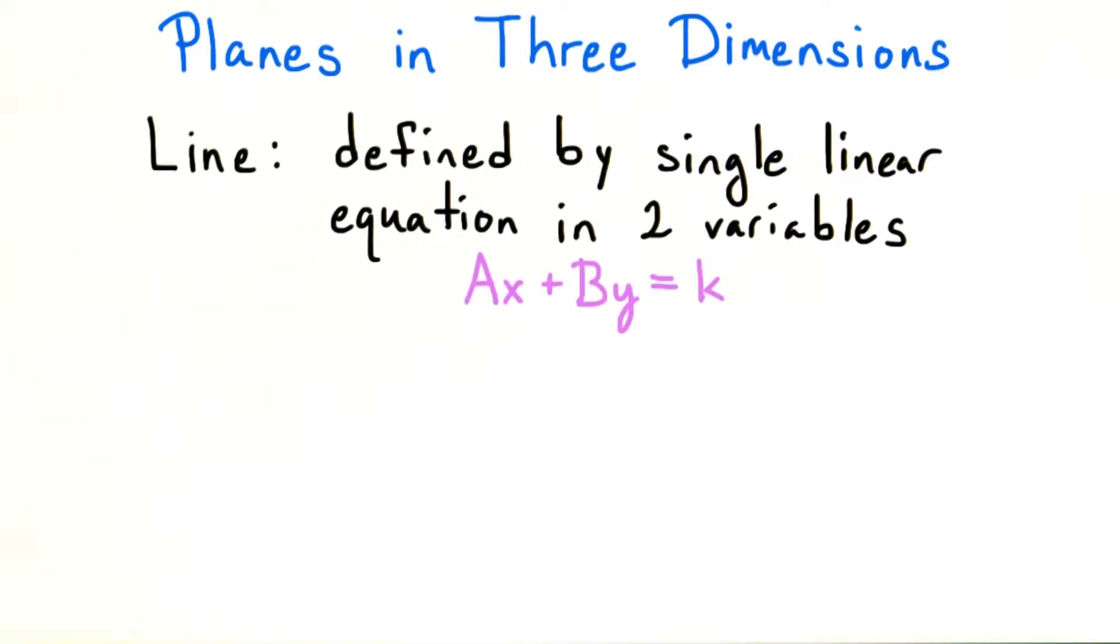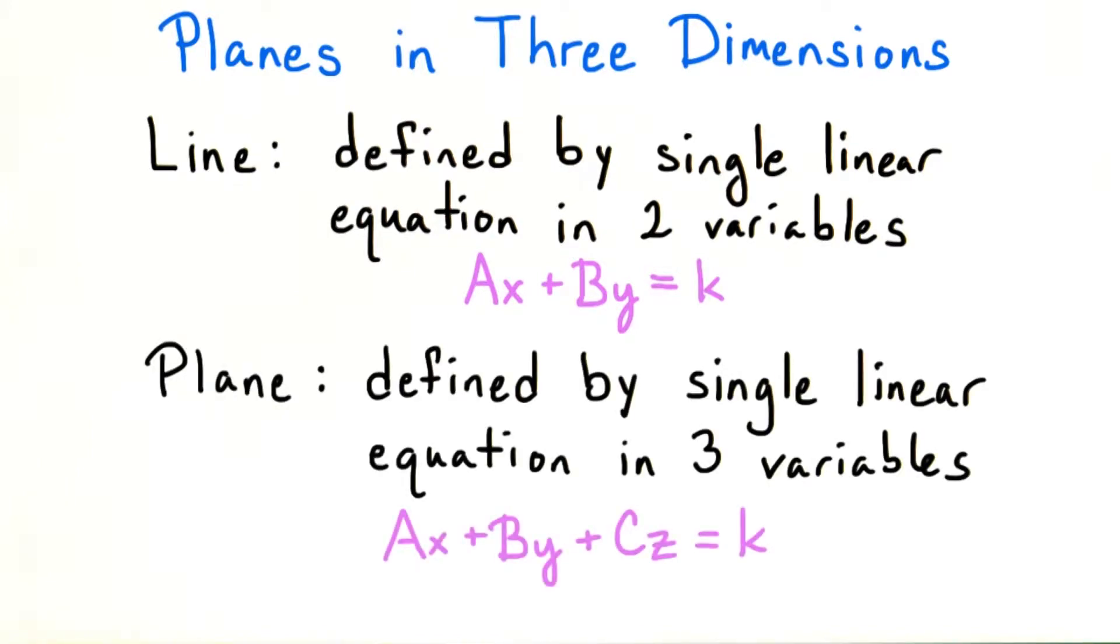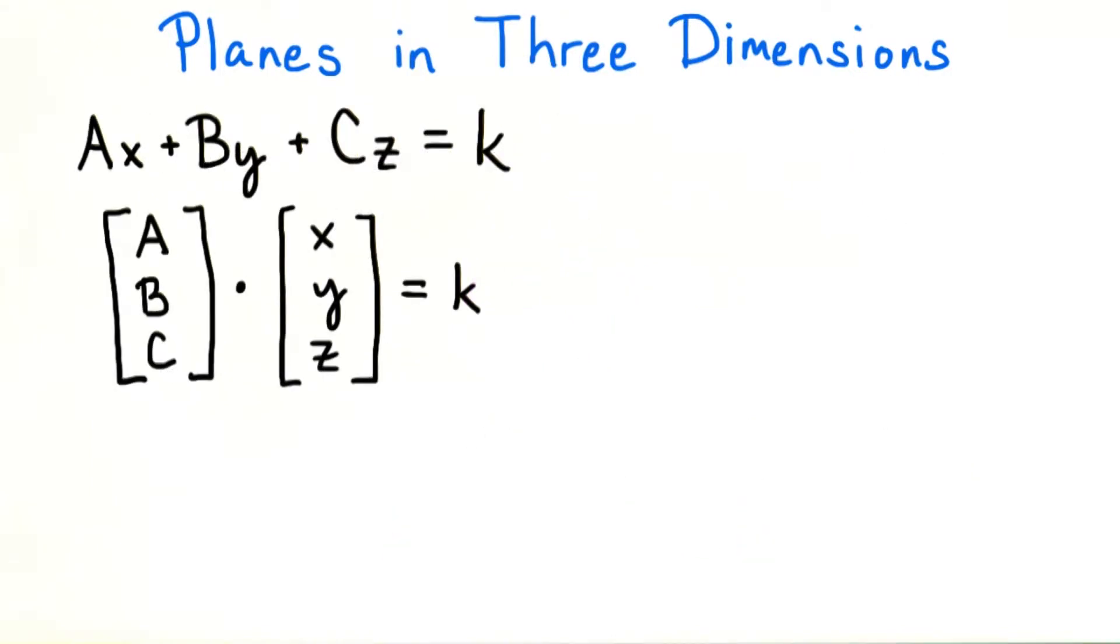Just like a single linear equation ax plus by equals k encodes a line in two-dimensional space, a single linear equation ax plus by plus cz equals k encodes a plane in three-dimensional space.